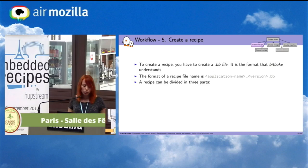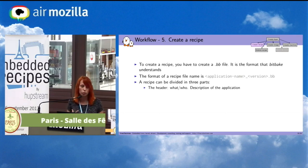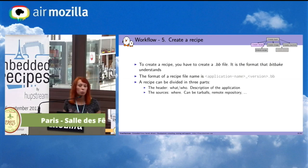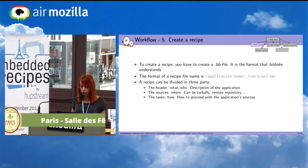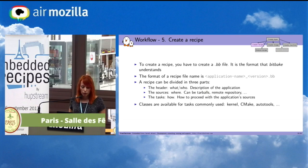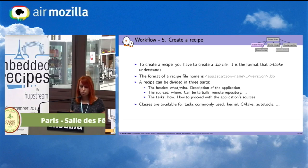The content of a recipe is divided into three parts: the header — what and who, so the description of the application; the sources — where to download the application sources, whether a tarball or remote repository; and finally the tasks — how to process the application sources. There are some classes available for commonly used tasks such as kernel, CMake, and Autotools.